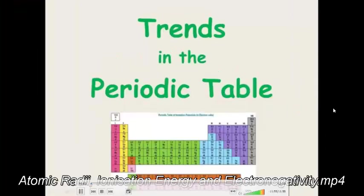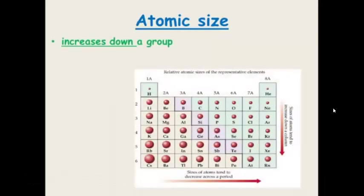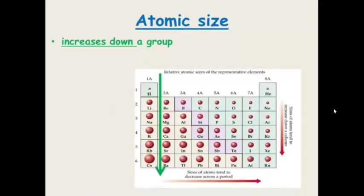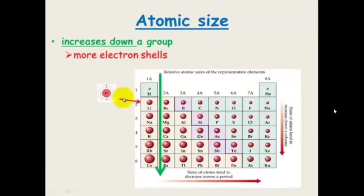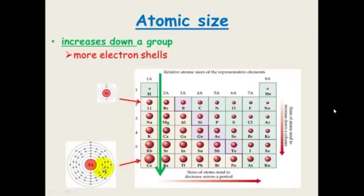Trends in the periodic table. Atomic size increases as you go down a group and this makes perfect sense because as you go down a group there are more electron shells. We will have a look at lithium here which has got 2 shells and cesium which has got 6 shells because it is in period 6. It is going to be a bigger size because there are more shells.